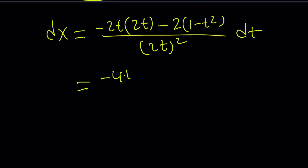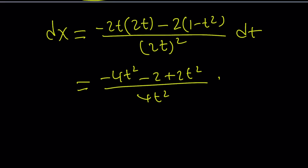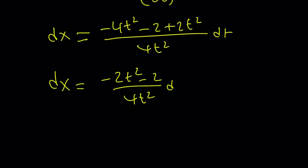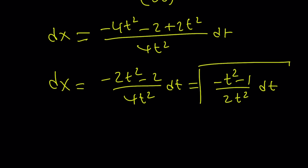We get (-4t² - 2 + 2t²) / 4t² dt, which simplifies to (-2t² - 2) / 4t² dt, and finally dx = -(t² - 1) / 2t² dt after dividing numerator and denominator by 2.